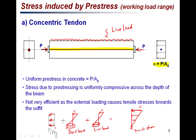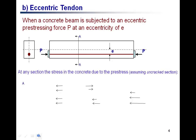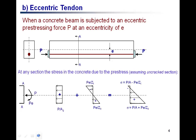While concentric prestressing is effective at reducing tensile stresses at the bottom, it causes unnecessary axial compressive stress at the top as all the stresses add up there. We do not actually need this axial stress at the top, so it is not an efficient way of prestressing. To avoid this, we can place the prestressing tendon eccentrically.